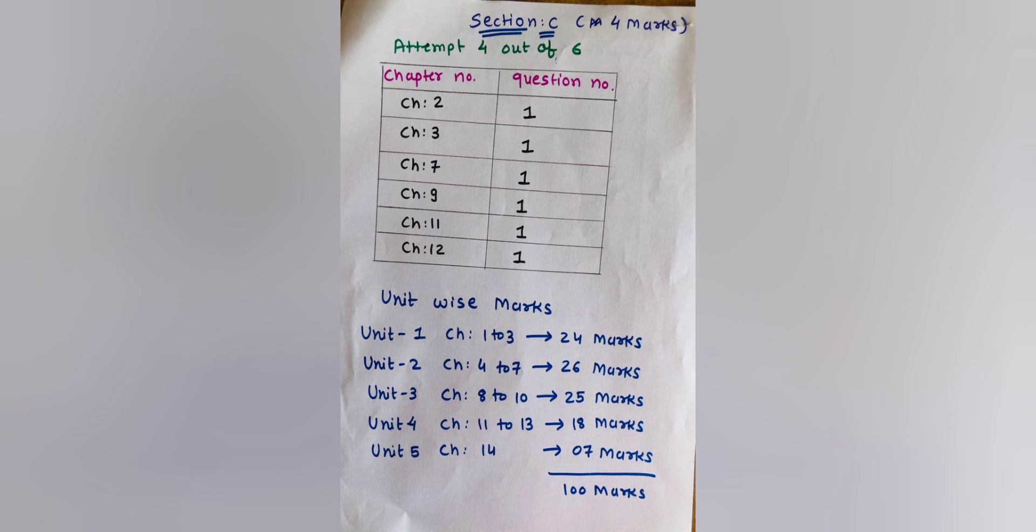Unit 4 includes Chapters 11, 12 and 13 and covers 18 marks. Unit 5 is Chapter 14 and covers 7 marks. So, total marks is 100.